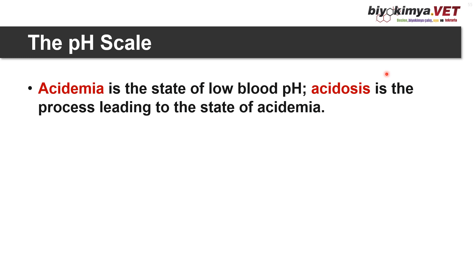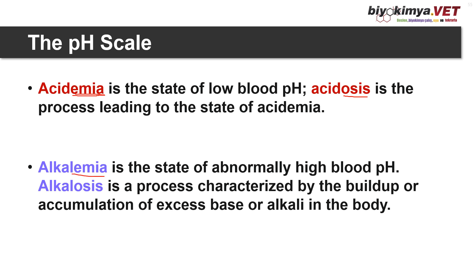There are some important definitions that are often confused or used interchangeably. Acidemia — the suffix '-emia' refers to a state in blood — is the state of low blood pH. Acidosis — the suffix '-osis' refers to metabolic events occurring — is the process leading to the state of acidemia. Alkalemia is the state of abnormally high blood pH, and alkalosis is the process characterized by accumulation of excess base or alkali in the body.